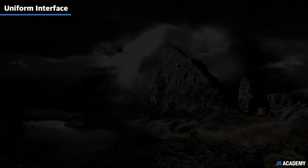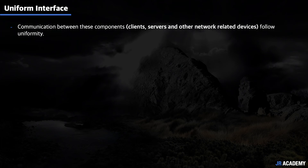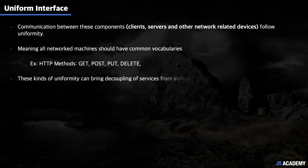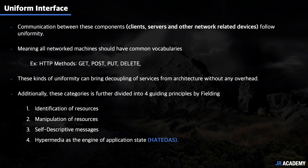The second constraint is uniform interface. Interaction between components — clients, servers, and other network machines — should follow uniformity of interface during communication. All network machines, including intermediate components, should have a common vocabulary, for example HTTP methods. This uniformity brings decoupling of service from architecture without overhead. This category is further divided into four guiding principles: identification of resources, manipulation of resources, self-descriptive messages, and Hypermedia As The Engine Of Application State (HATEOAS). These will be covered in detail in upcoming videos.